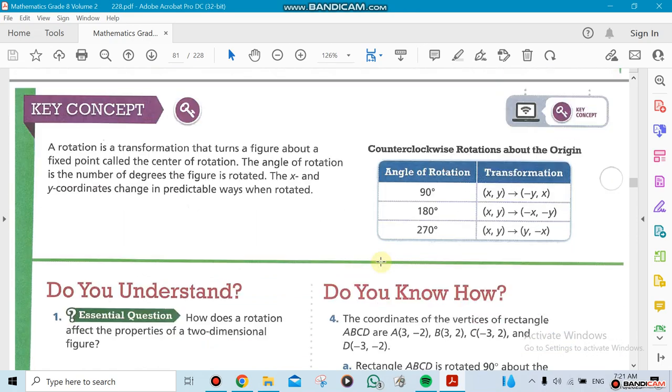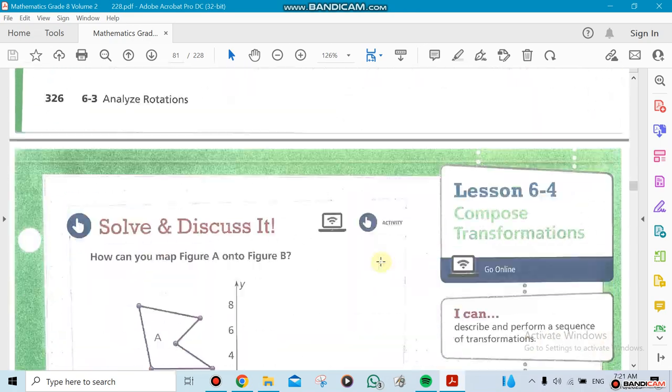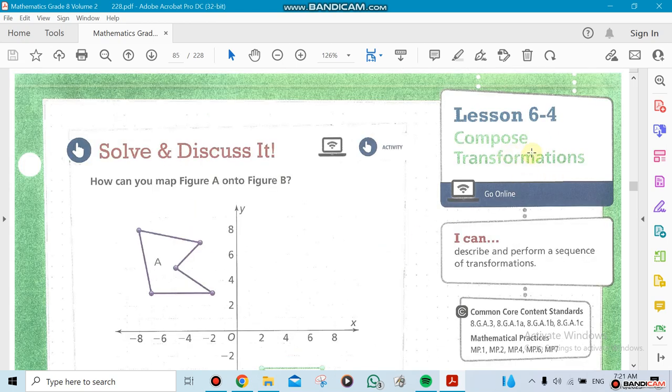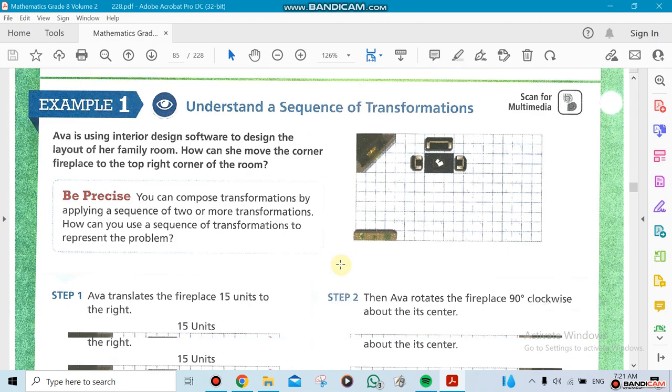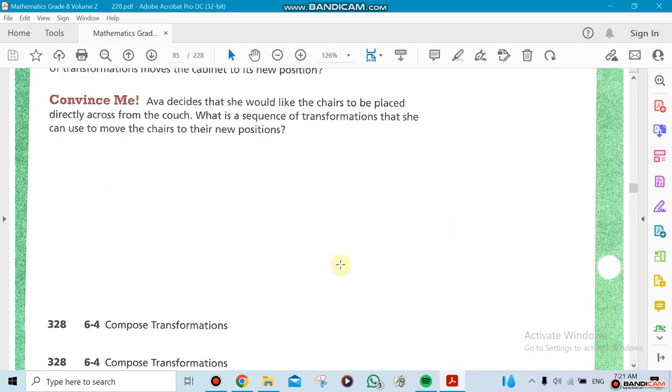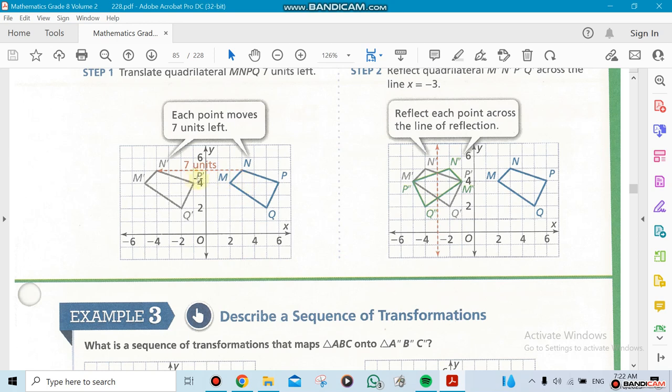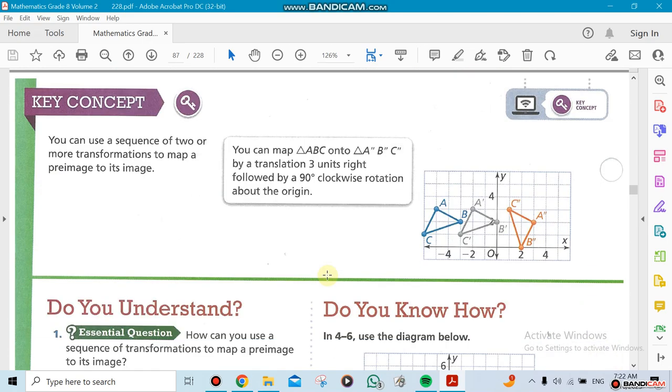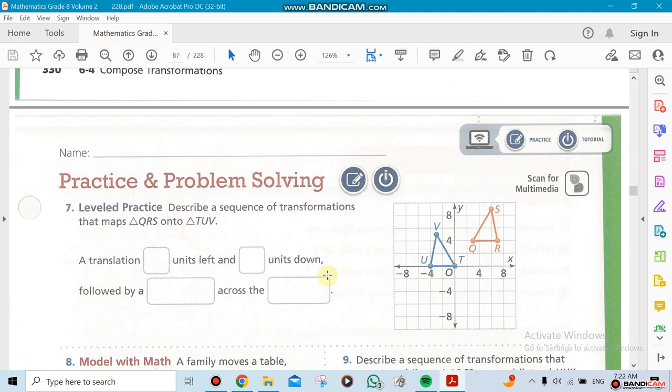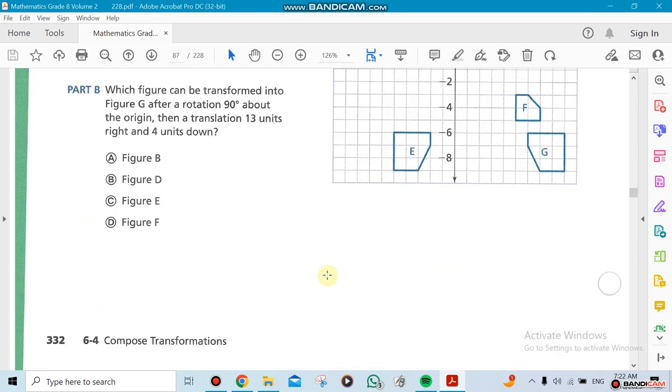The next section will be about composite transformations, where you have more than one thing to do for a shape. I could slide it, rotate it, or flip it. This is more interesting—you'll probably enjoy this because it has more than one thing. For example, we did a translation, just moving things around, then reflecting over a line called the reflection line or mirror, and then rotating. This will take us a couple of days to do.